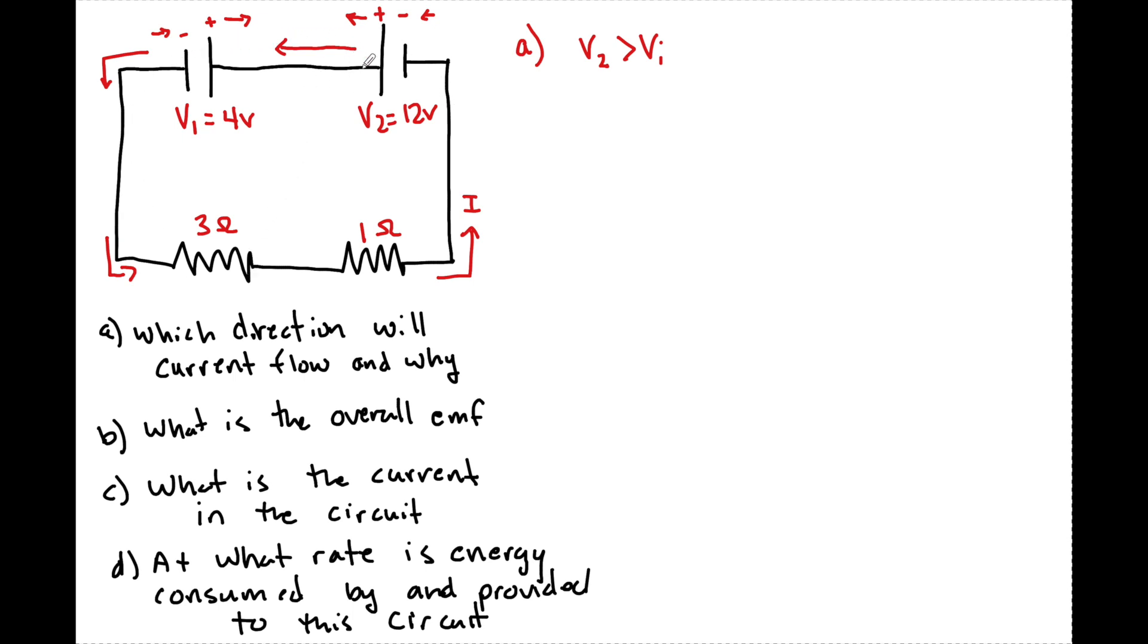And you're going to see that whenever there's batteries in two different positions, we're going to look and see, especially in series, which one of them is stronger - that's going to override the direction of the current.